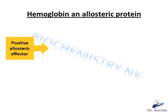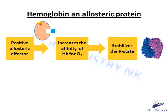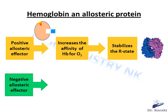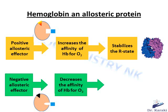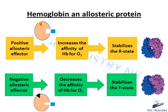In hemoglobin, oxygen is the ligand. When an activator or positive allosteric effector binds to hemoglobin, it induces a conformational change increasing its affinity to bind more oxygen, thus stabilizing the relaxed R state — knowing that the R state of hemoglobin has the highest affinity for oxygen. When a negative allosteric effector, also known as an inhibitor, binds to hemoglobin, it induces a conformational change decreasing its affinity for oxygen and thus stabilizing the tense T state.